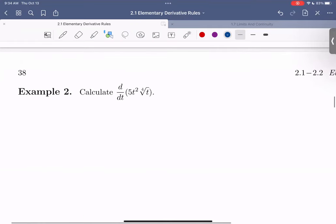In example 2, we're asked to calculate the derivative with respect to t of the function 5t² times the 4th root of t. There's a lot going on here. The first step when faced with computing a derivative is to try to rewrite it in a way where we can recognize which shortcut to use.